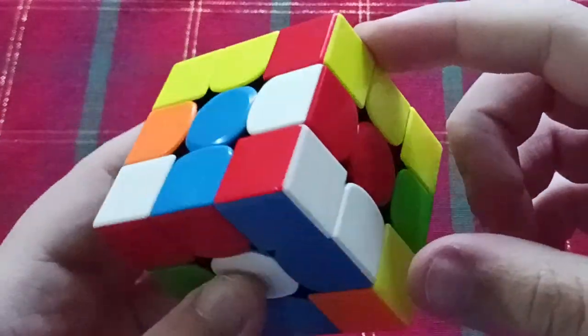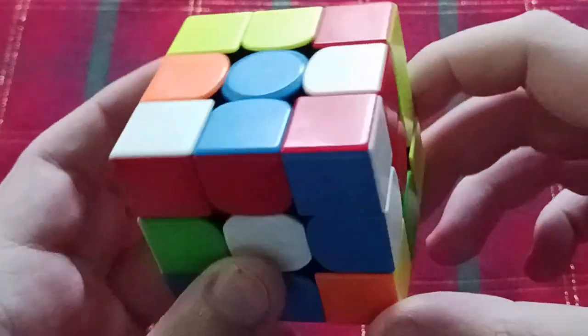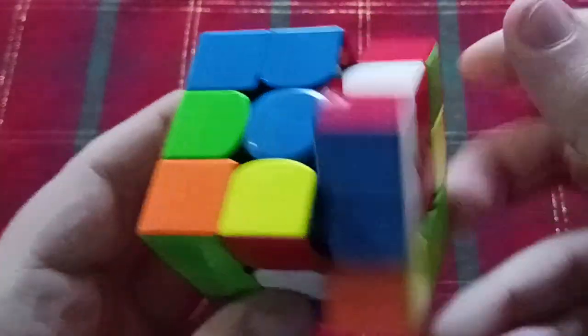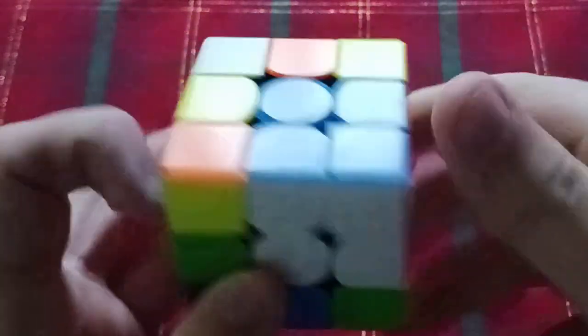So the first step in CFOP is the C, which is the cross. So basically you just build the cross. It's not that hard.